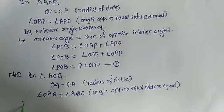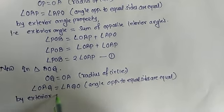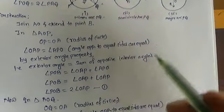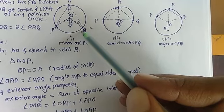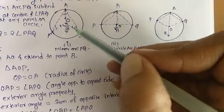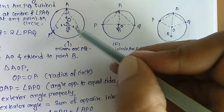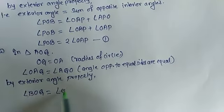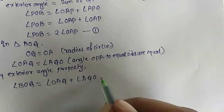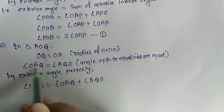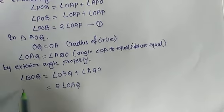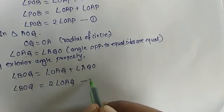By the exterior angle property, angle BOQ equals the sum of opposite interior angles OAQ and AQO, which is angle OAQ plus angle AQO. Since both angles are equal, angle BOQ equals twice angle OAQ. We write this as Equation 2.